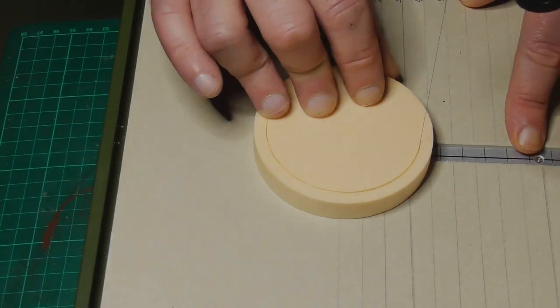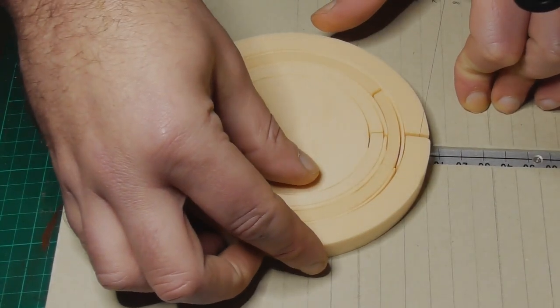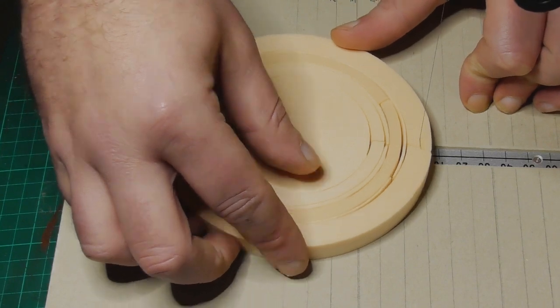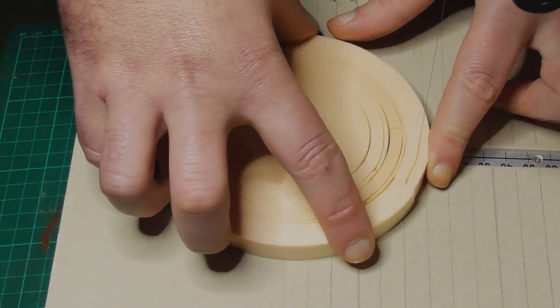By cutting slowly at a very low heat there is almost no loss of material so these will go back together really tightly. The power dial was on 1.5 while I was cutting these.